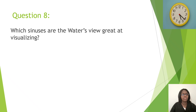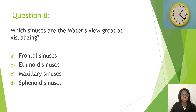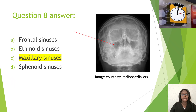Question eight: Which sinuses are the Waters view great at visualizing? A, frontal sinuses; B, ethmoid sinuses; C, maxillary sinuses; D, sphenoid sinuses. The correct answer is C, maxillary sinuses. The red arrow is pointing at the maxillary sinuses — you can see them well on this view.